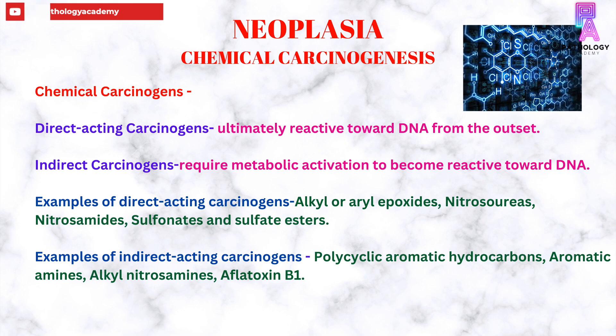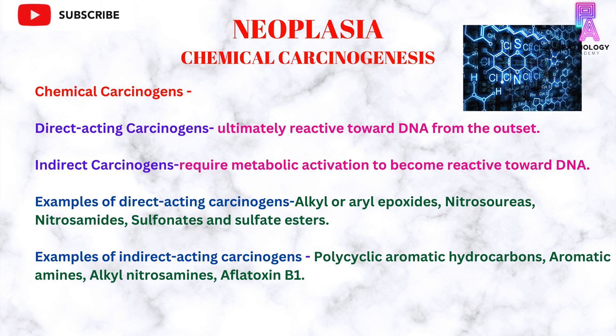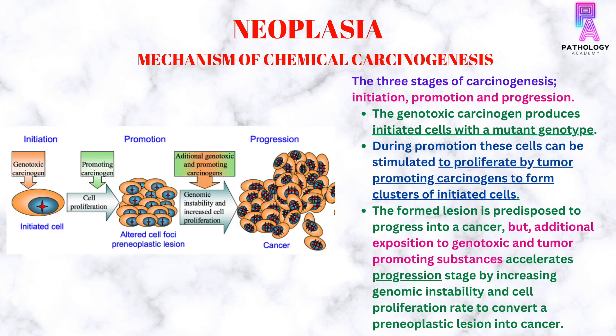Direct acting carcinogens are ultimately reactive towards DNA from the outset, whereas indirect carcinogens require metabolic activation to become reactive towards DNA. Examples of direct acting carcinogens are alkyl or aryl epoxides, nitrosoureas, nitrosamides, sulfonates, and sulfate esters. Examples of indirect acting carcinogens are polycyclic aromatic hydrocarbons, aromatic amines, alkyl nitrosamine, and aflatoxin B1.